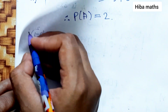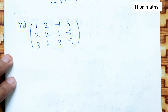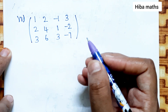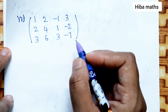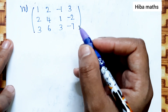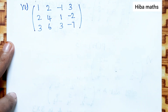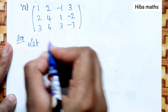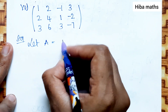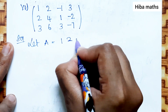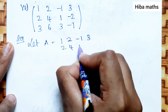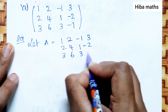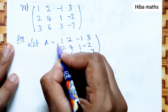Sixth question involves a 3 rows by 4 columns matrix, so we use row reduction to find the rank. Let A equal to [1, 2, -1, 3; 2, 4, 1, -2; 3, 6, 3, -7]. We apply row operations R1, R2, R3 to reduce to echelon form.